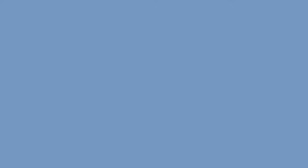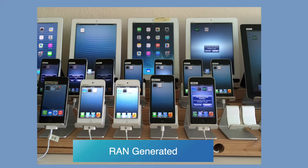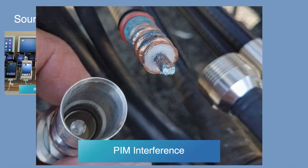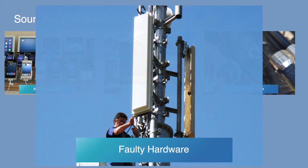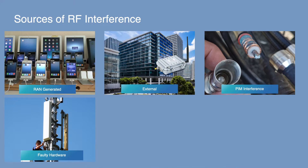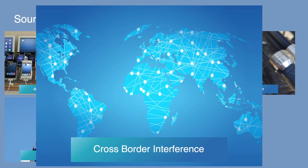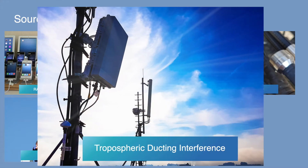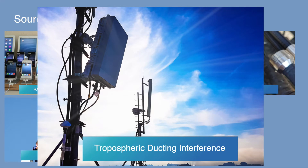Let's start by reviewing the RF interference sources that negatively affect mobile operator licensed spectrum: interference from within the RAN itself, which requires network optimizations; interference from external sources outside the mobile network; interference from PIM sources due to antenna, cable, or connector problems at a site; interference from faulty hardware units at a site; interference in border areas due to differences in band allocations between countries; and the focus of our discussion today — interference from signals carried long distances during periods of tropospheric ducting.